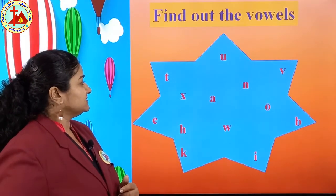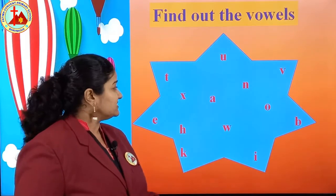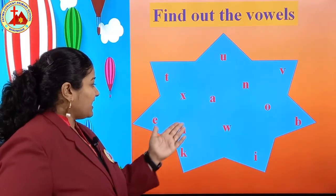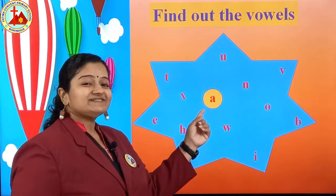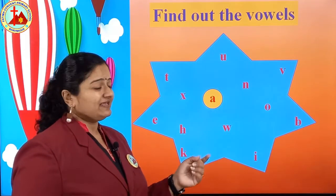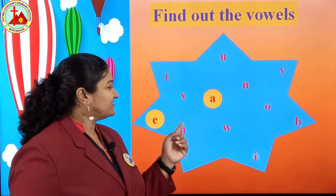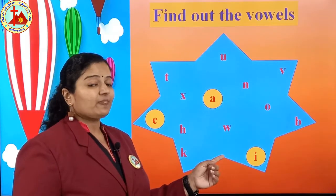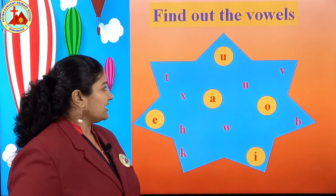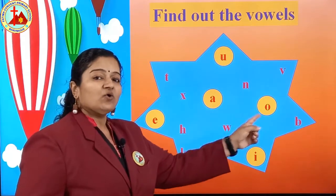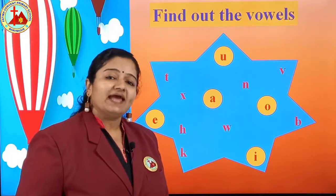Find out the vowels — same activity. You have to find the vowels. You can see T, E, X, H, K. Tell me which are the vowels. Number one is A, after A is E, then I, then O, and last one is U. A, E, I, O, U are five vowels. Before vowels we use AN.